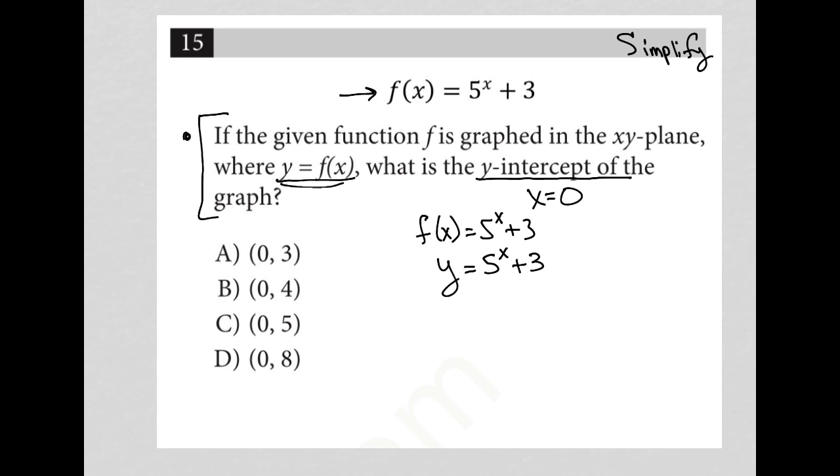And then because I'm looking to find the y intercept, and I know that means that x equals zero, I'm going to figure out what happens when y equals five to the zero plus three, right? Replacing x with zero.